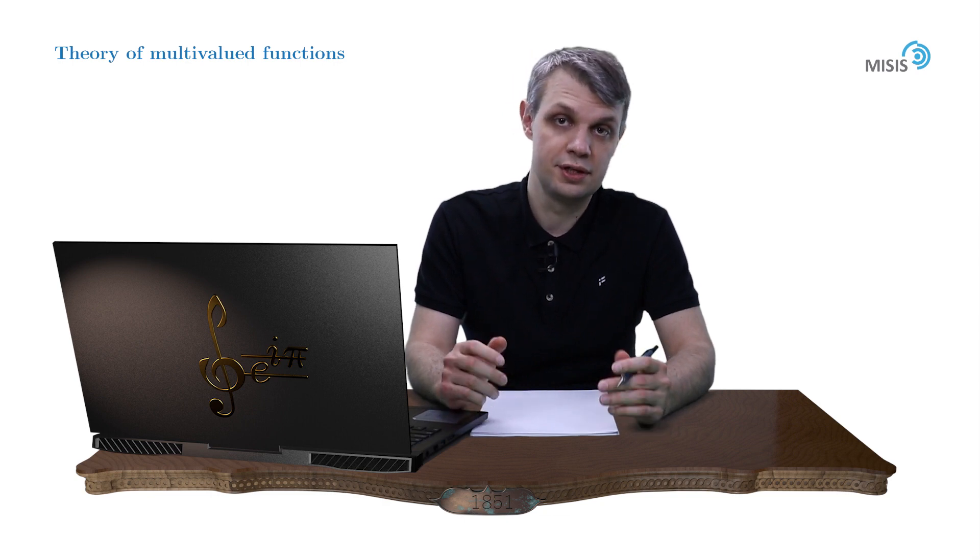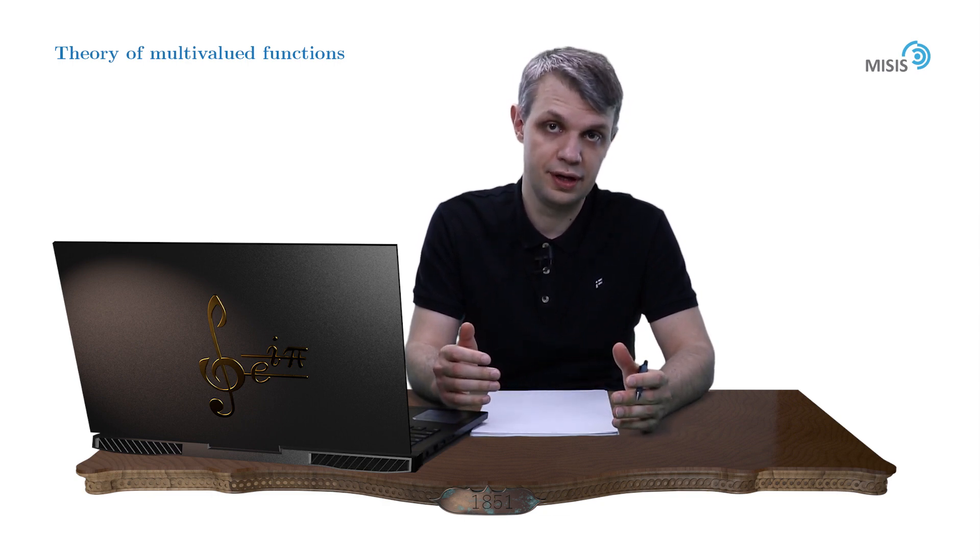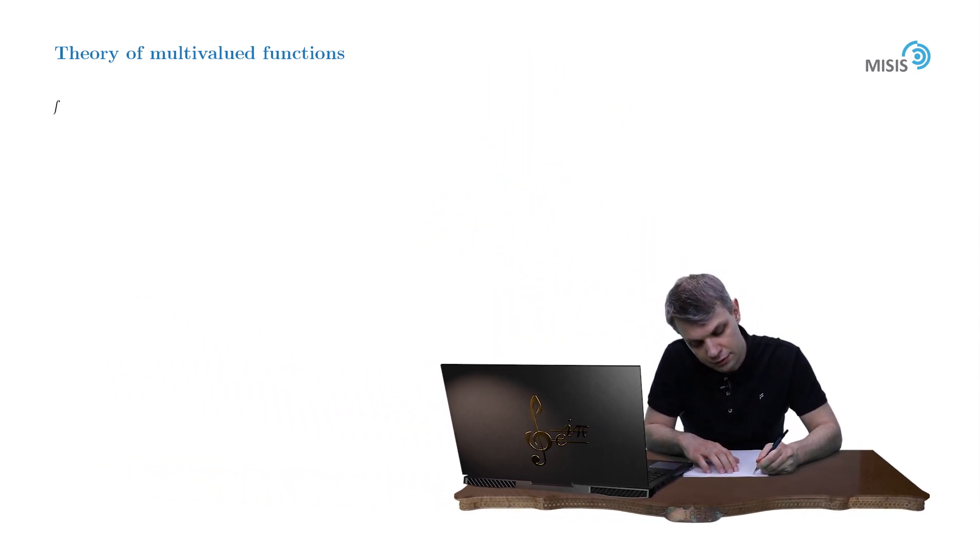As a first and trivial example of the extraction of the regular branch of a multivalued function, let's consider the following function: f equals the square root of 1 minus z squared.